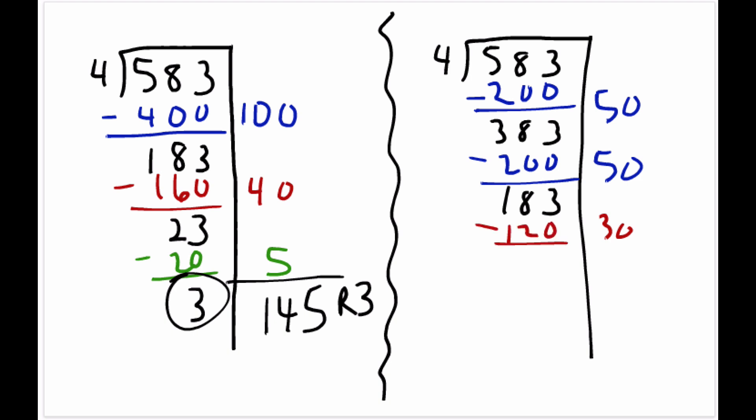And we subtract and we get 63 left over. Now the student might say, oh well, I happen to know that 4 times 15 gives me 60. So there's our remainder of 3, and then we total up our partial quotients.